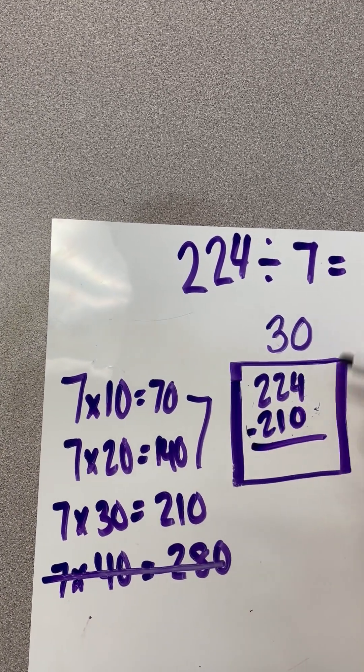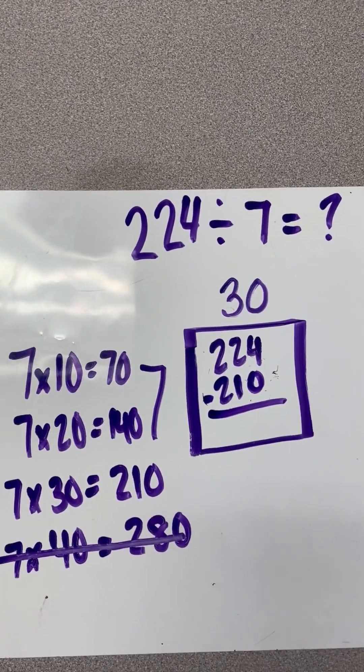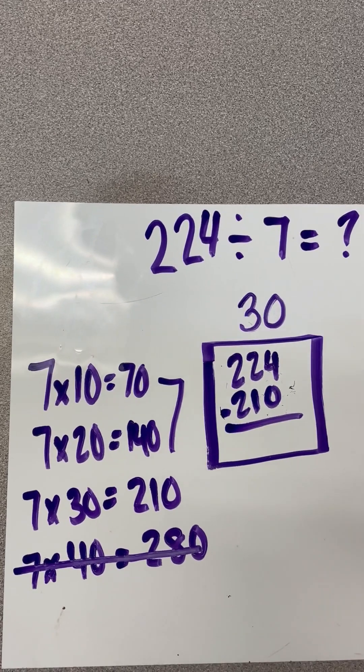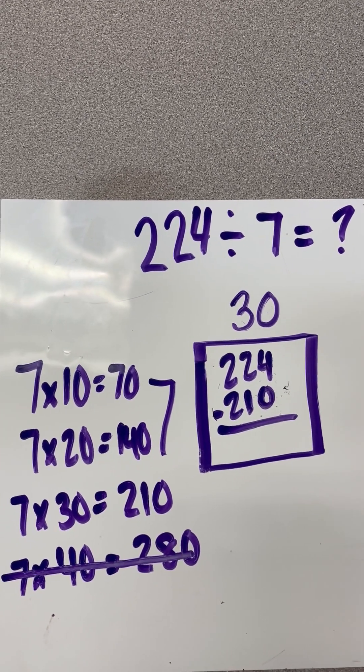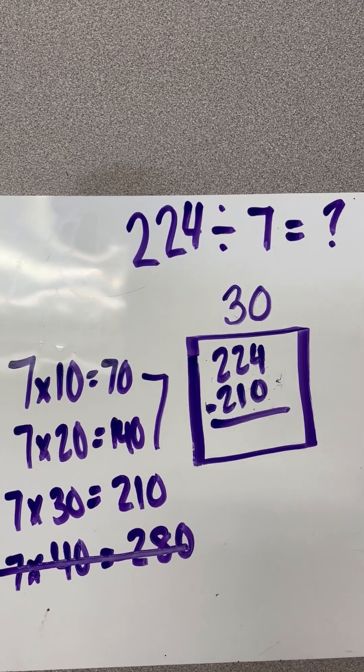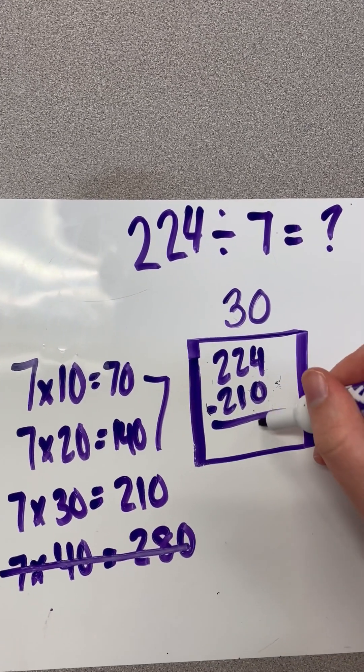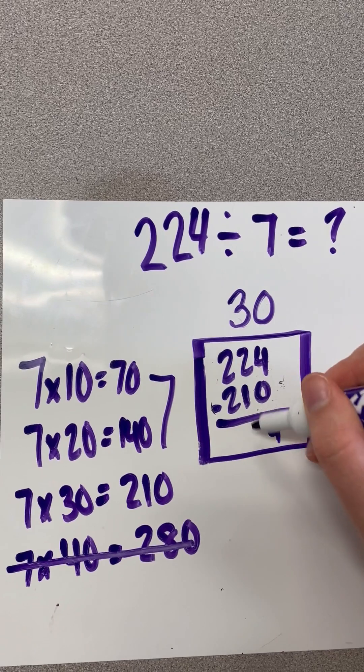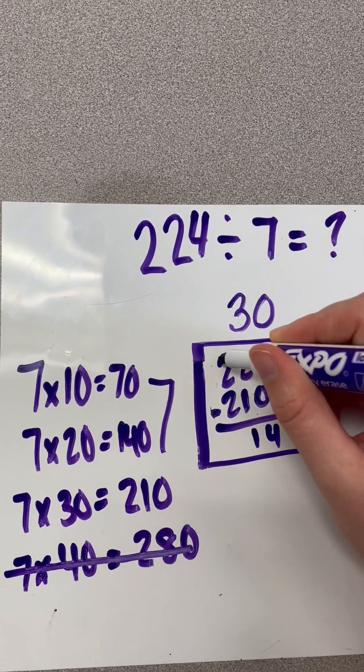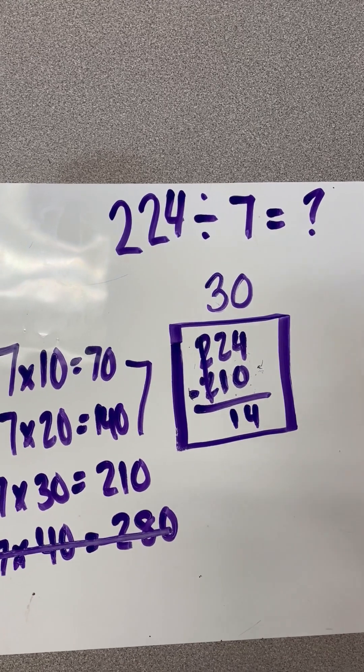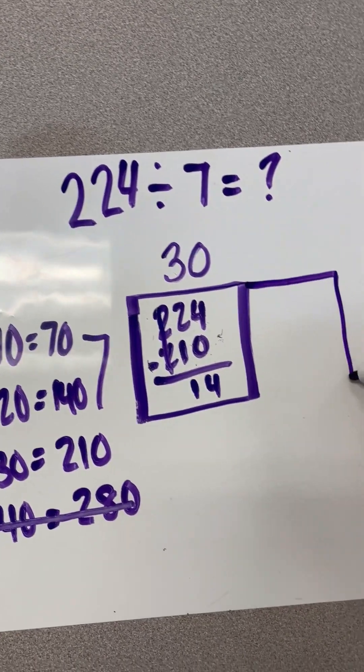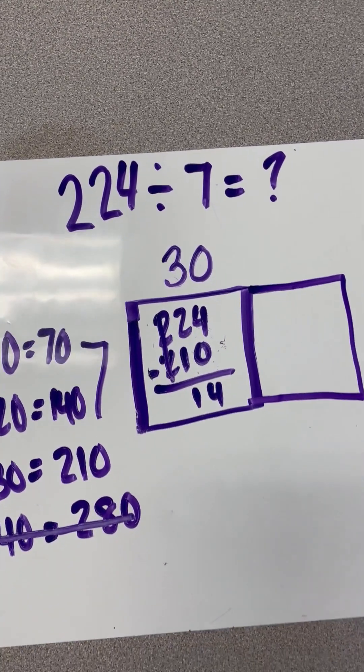Now we're subtracting here because that means we've used up 210 of that original 224, but we still have some more to go. So let's figure out how much more we have to go. So we know that this is 4, and that's 1, and that's 0. 14. So I still have to have 14 more to go to get somehow divvy up that 14 that's left.